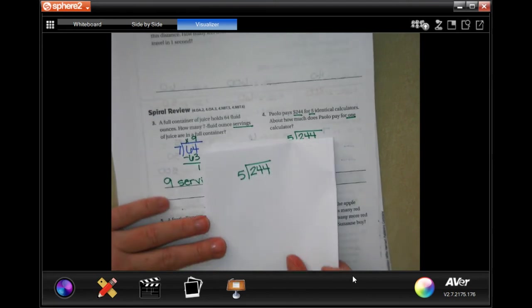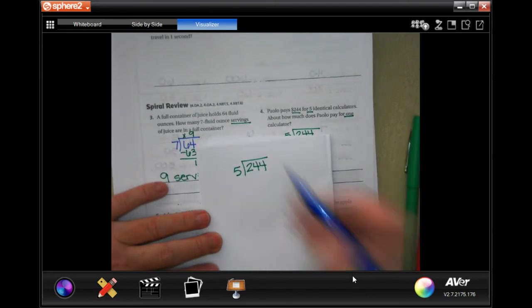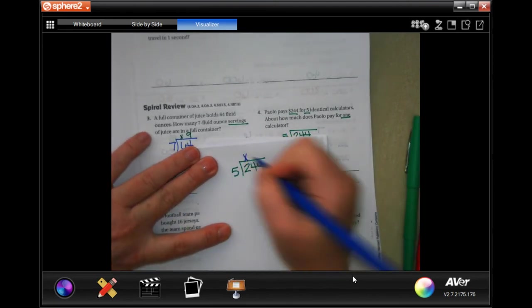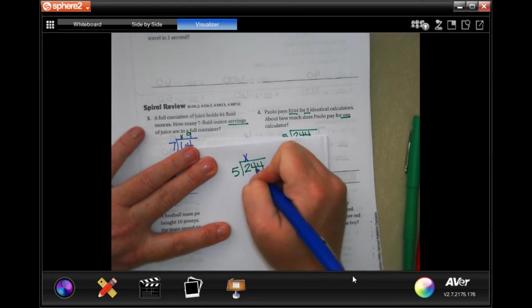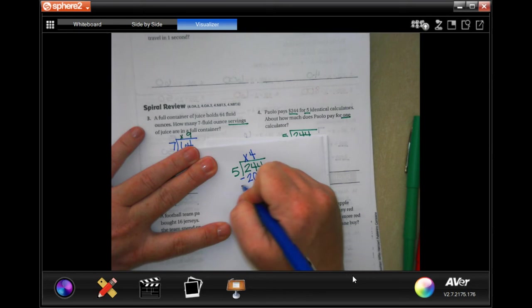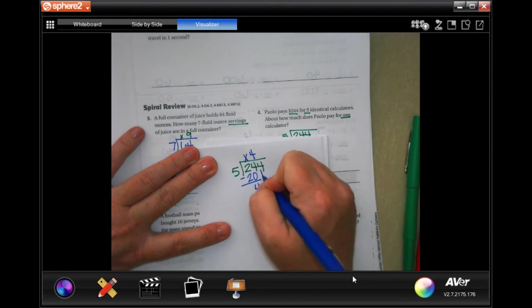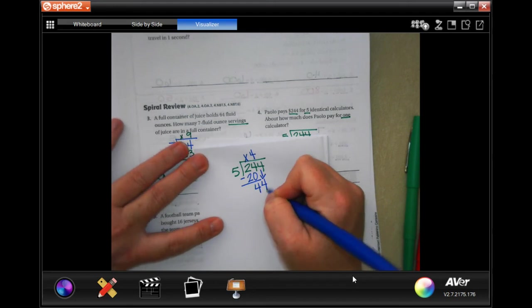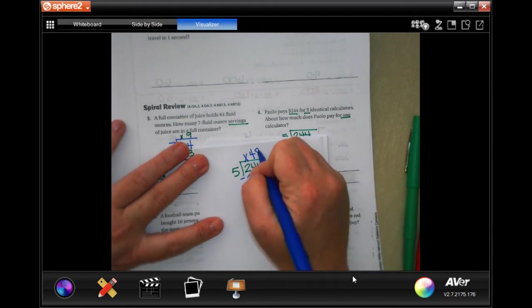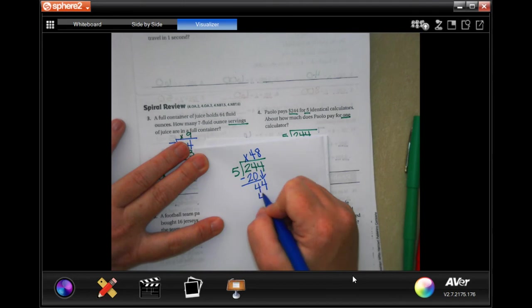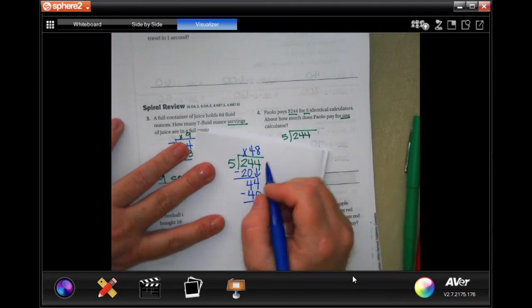So five is not going to go into two, placeholder. It will go into 24 four times. Four times five is 20, subtract and get four. Now four is smaller than five so I can bring down my other four. Five is going to go into forty four eight times because eight times five is forty. When I subtract I get zero.